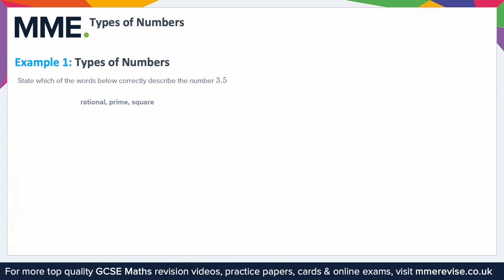So I'll quickly define what each of these is. Rational means you can write it as a fraction, so an integer over an integer as a fraction. Prime means it only has two factors. So, for example, 2 is prime because the only factors it has are 1 and 2. 5 is prime because the only factors it has are 1 and 5, and so on. A square number is one that is made by squaring a number. So, for example, 4 is a square number because it's 2 squared. 9 is a square number because it's 3 squared, and so on.